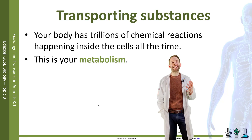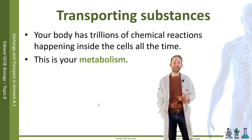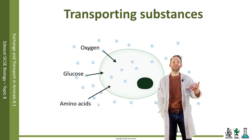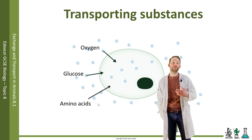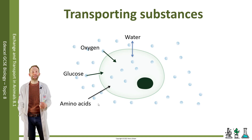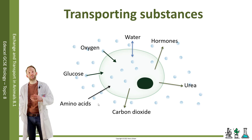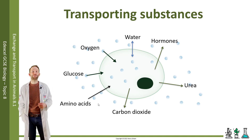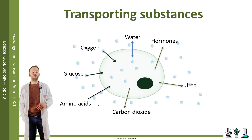Your body has trillions of chemical reactions happening inside the cells all the time. This is what we call your metabolism. These metabolic reactions need some substances to work and also produce certain wastes that you need to get rid of. Cells are going to need things like oxygen and glucose to carry out aerobic respiration, amino acids to make more proteins, and sugars for energy. They'll also need water, but they're going to make waste as well — things like carbon dioxide and urea — and they may also produce things like hormones or enzymes that need secreting from the cell. So molecules need to move in and molecules need to move out of cells.